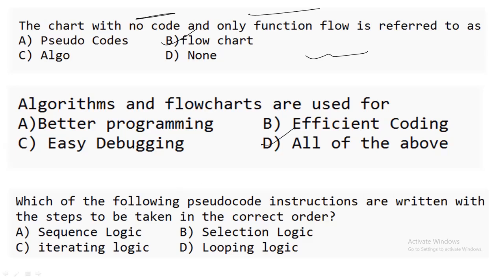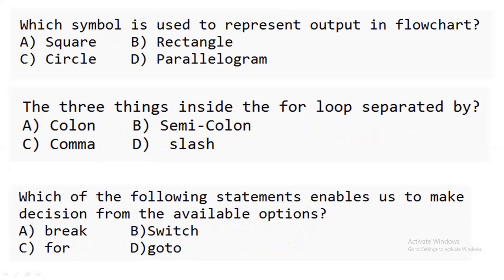The next question: which type of pseudo code instructions are written with steps in the correct order — sequence logic, selection logic, iterating logic, or looping logic? Pseudo code instructions written with steps in the correct order follow sequence logic. So sequence logic is the correct answer.